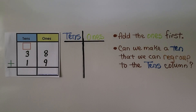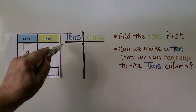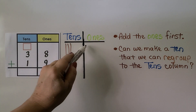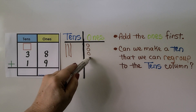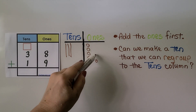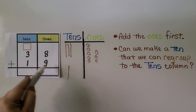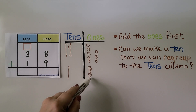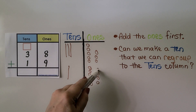Let's try again with 38 plus 19. Thirty-eight is three tens — we make three lines — and eight ones, counting one through eight. Nineteen is one ten and nine ones, counting one through nine.